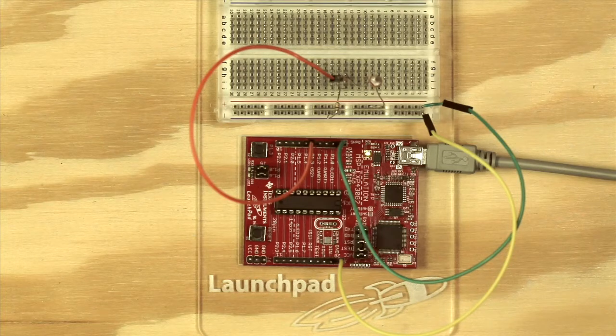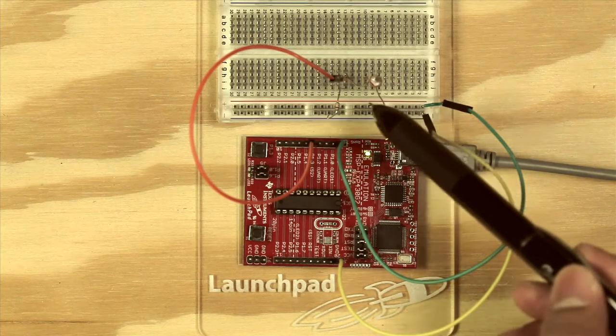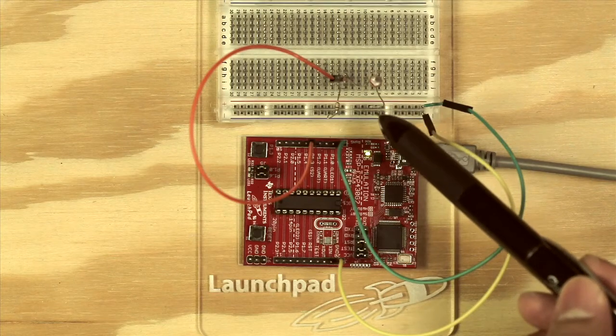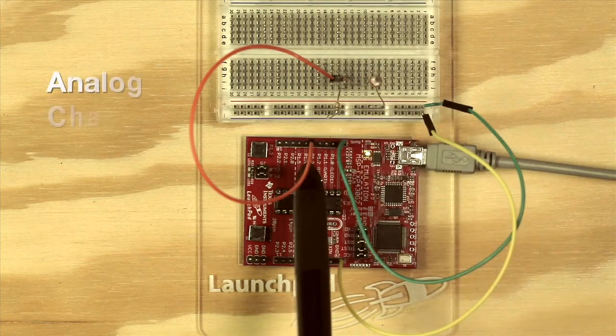In this example, we're going to use this photodiode, or light sensor, as our analog input, which is connected to pin P1.3, or analog channel A3.